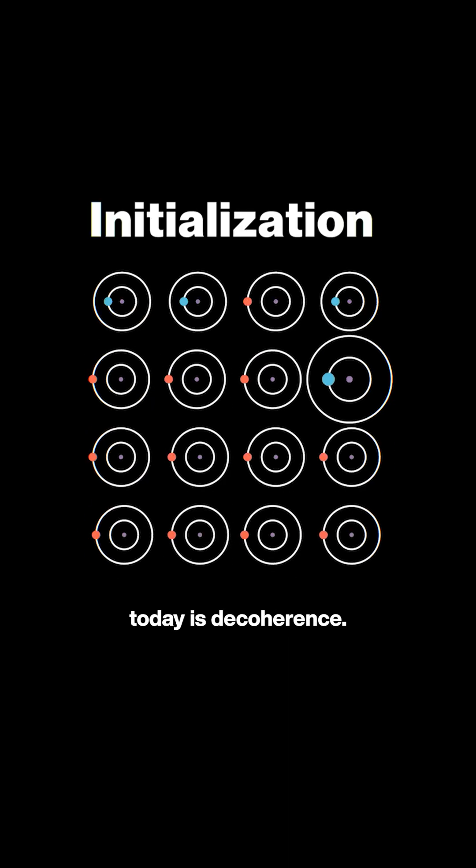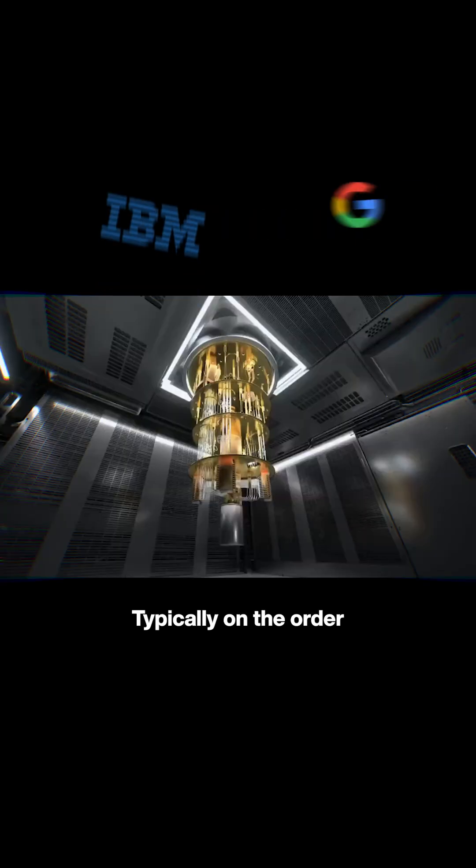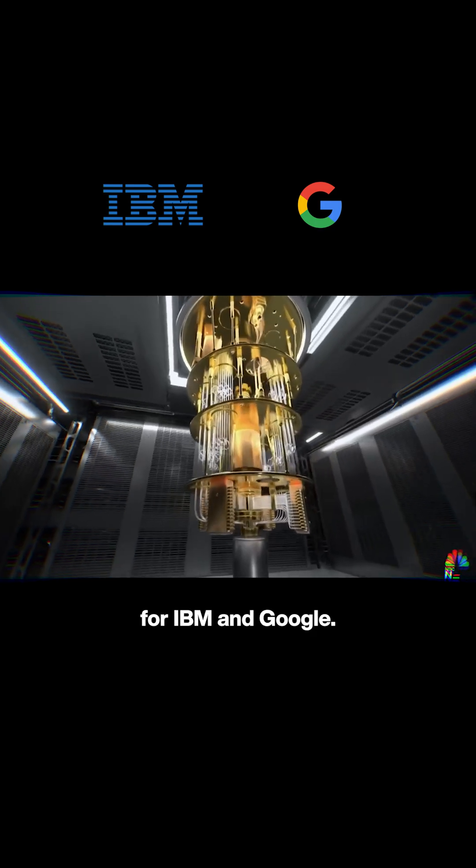One of the biggest problems in quantum computing today is decoherence. Qubits lose their information very quickly, typically on the order of 100 microseconds for IBM and Google.